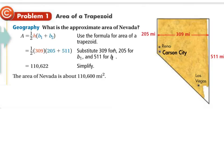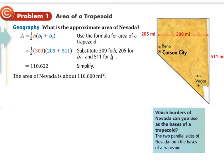So they've got this image of Nevada. What's the approximate area of Nevada? You can treat it as though it's a trapezoid because it's pretty close to being one. What are the bases? They've got to be parallel. So you use this border and this border as the two bases. You do one half the height, which is 309 — remember the distance between the two bases — times base one, 205, plus base two, 511.